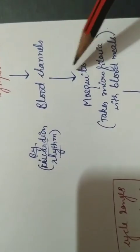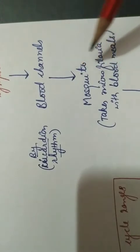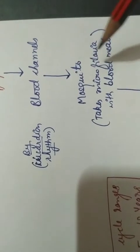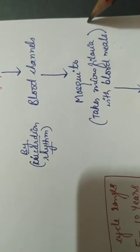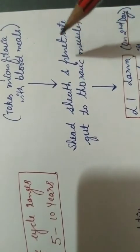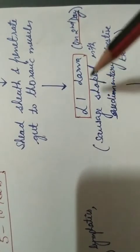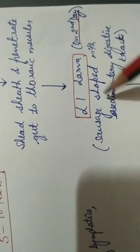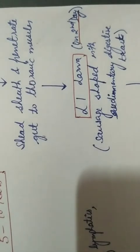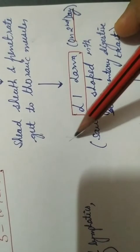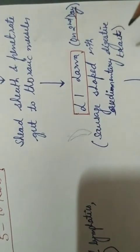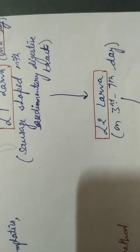When the mosquito takes a blood meal, the microfilaria is also taken into its body. Once inside the mosquito, the microfilaria sheds its sheath, passes from the gut, and penetrates the thoracic muscles. Within the thoracic muscles, on the second day, it becomes the first larva, which is sausage-shaped and has a rudimentary digestive tract. Then on the third to seventh day, it forms the second larva.